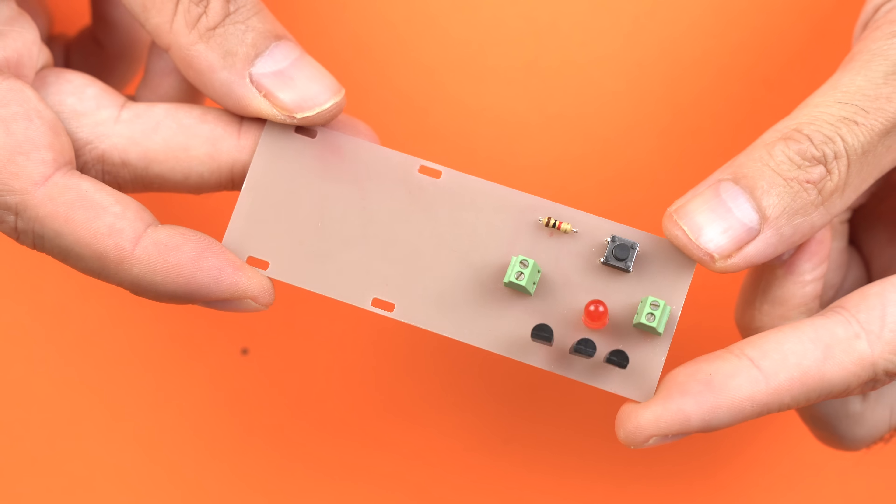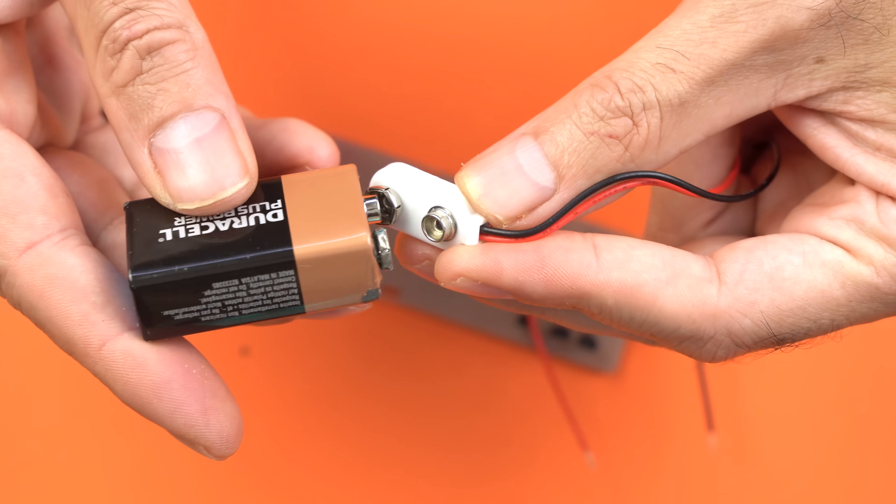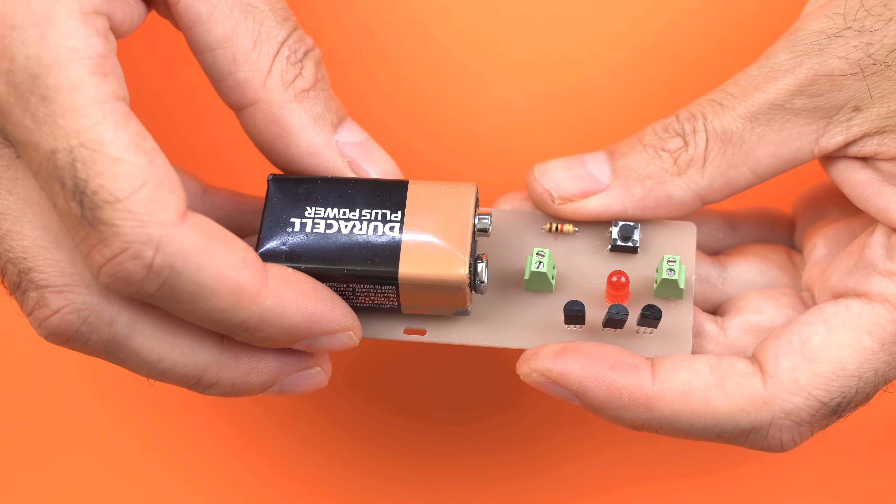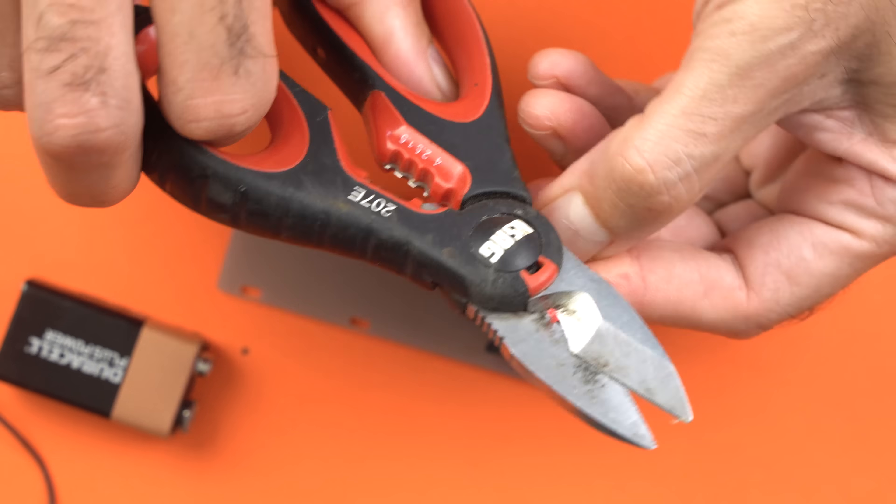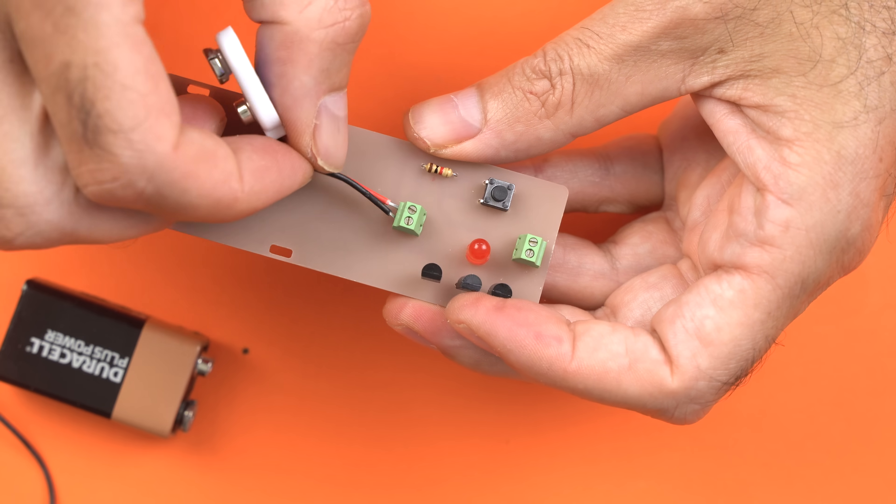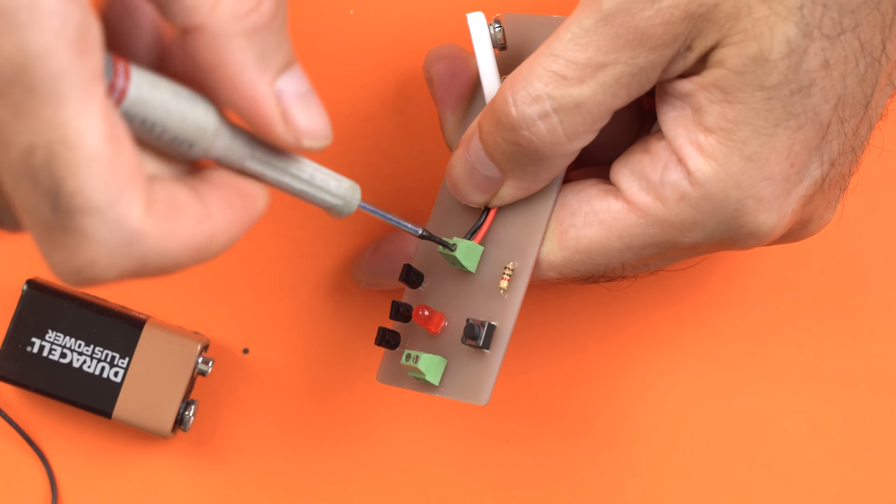The PCB is now complete. The power clip is the same one used in the low-cost version, but this time I won't solder it directly to the PCB. Instead, I'll connect it to the two-pin terminal block.